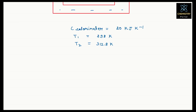We can find ΔT. We know heat exchange at constant volume, because it is a bomb calorimeter with constant volume. The formula for heat exchange at constant volume is Q = ΔU = C·ΔT. The C value is 20 kilojoule per Kelvin.